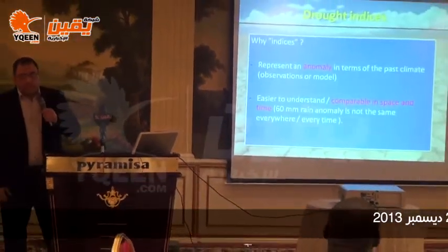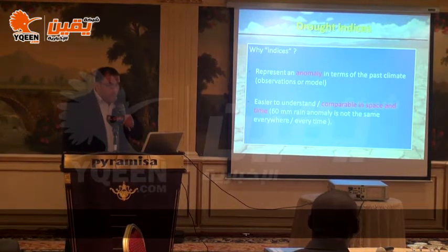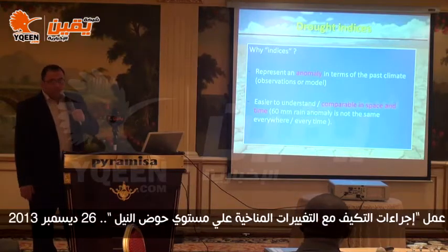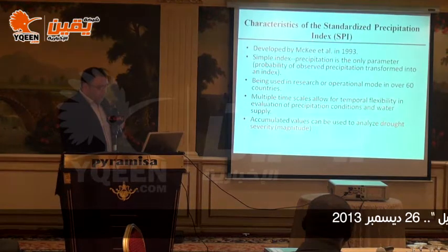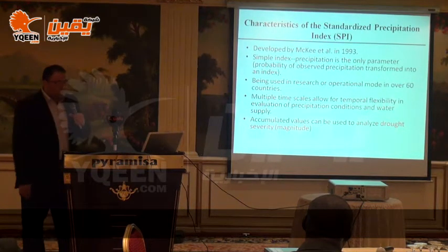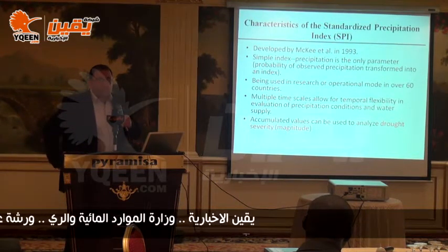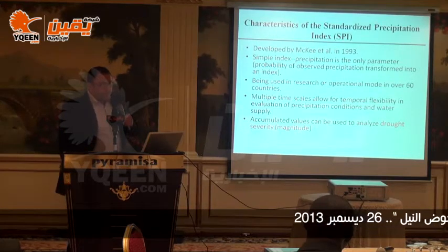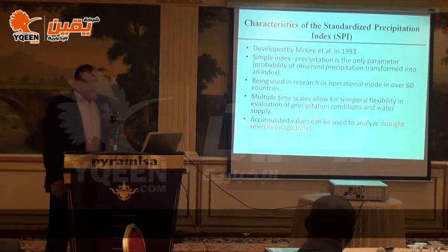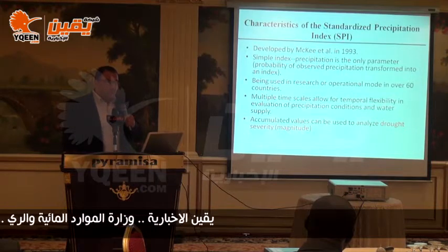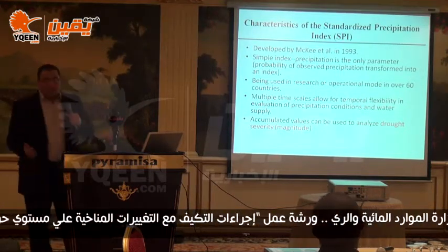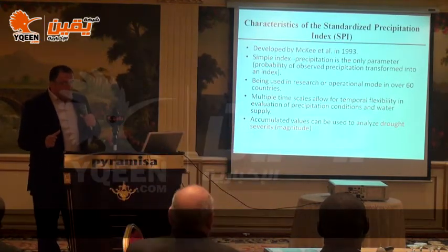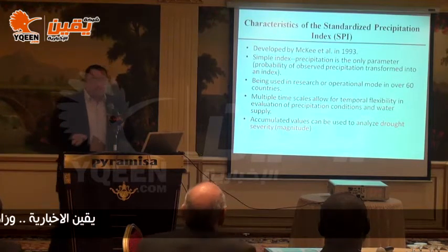Expressing anomaly events using indices is very useful and easier to understand since they are comparable in space and time. For example, 60 millimeters of anomaly is not the same everywhere, so using indices is more understandable. The Standardized Precipitation Index, or SPI, was developed in 1993. It is a simple index dependent only on precipitation, and it expresses the probability of observed precipitation transformed into an index, used in research across over 60 countries. It provides multiple time scales — 1, 3, 6, and 12 months — and its magnitude reflects the severity of the drought.